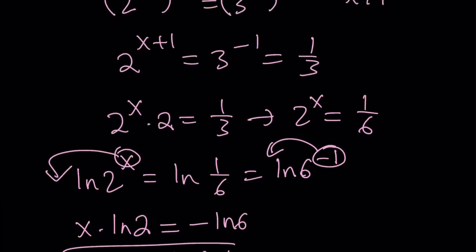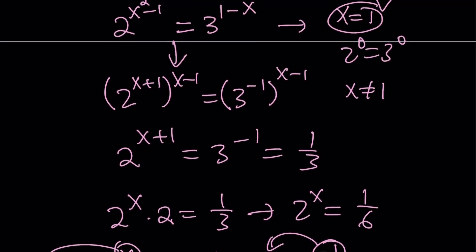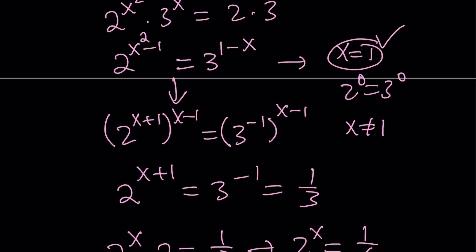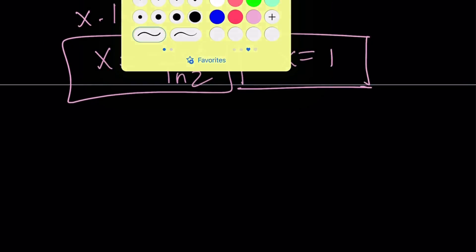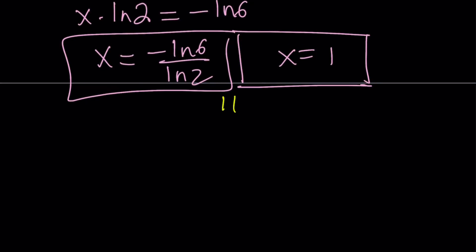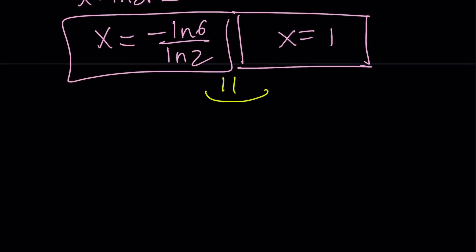But I already knew x = 1 is a solution. Here we got that real quick because 2^0 = 3^0. Therefore, we got our two solutions again by using a different method. This brings us to the end of this video. Thank you for watching. I hope you enjoyed it. Please let me know. Don't forget to comment, like, and subscribe. I'll see you tomorrow with another video. Until then, be safe, take care, and bye-bye.